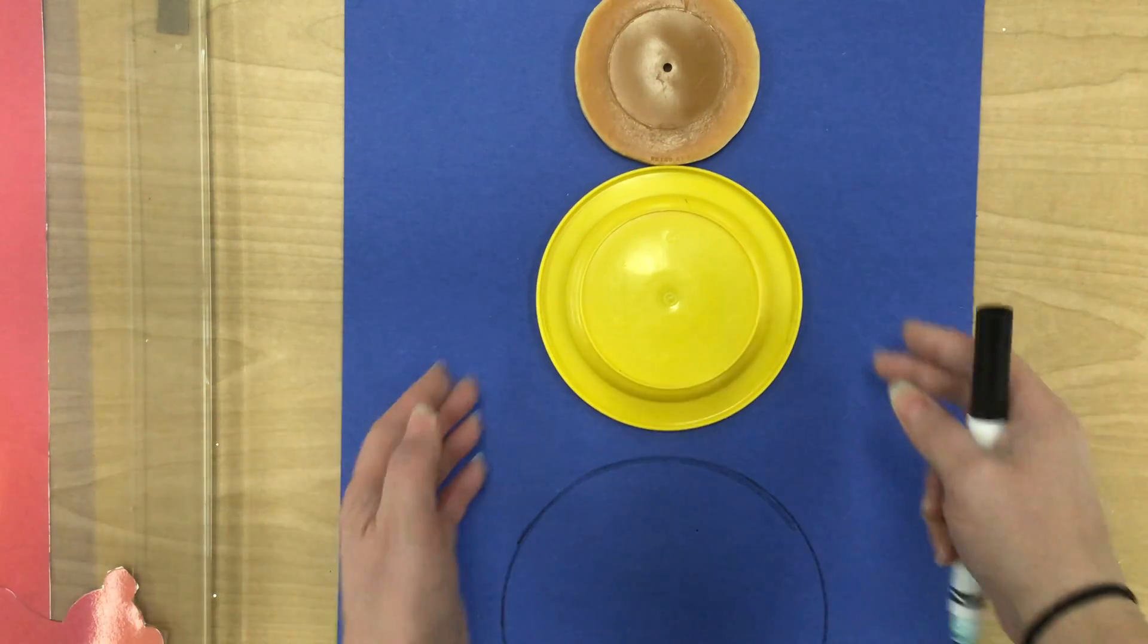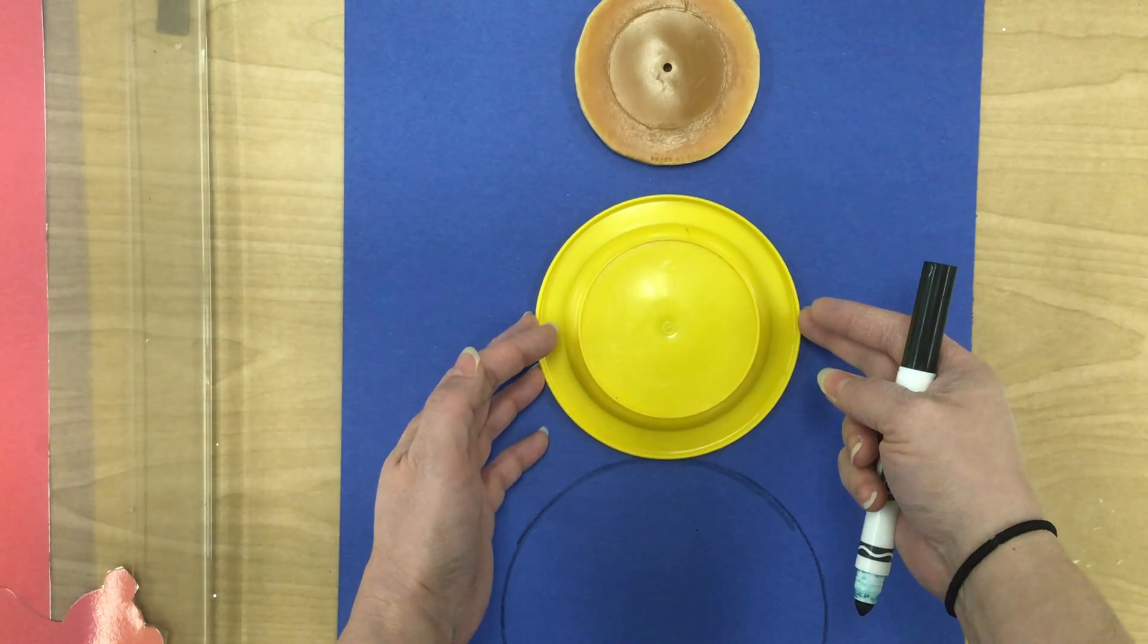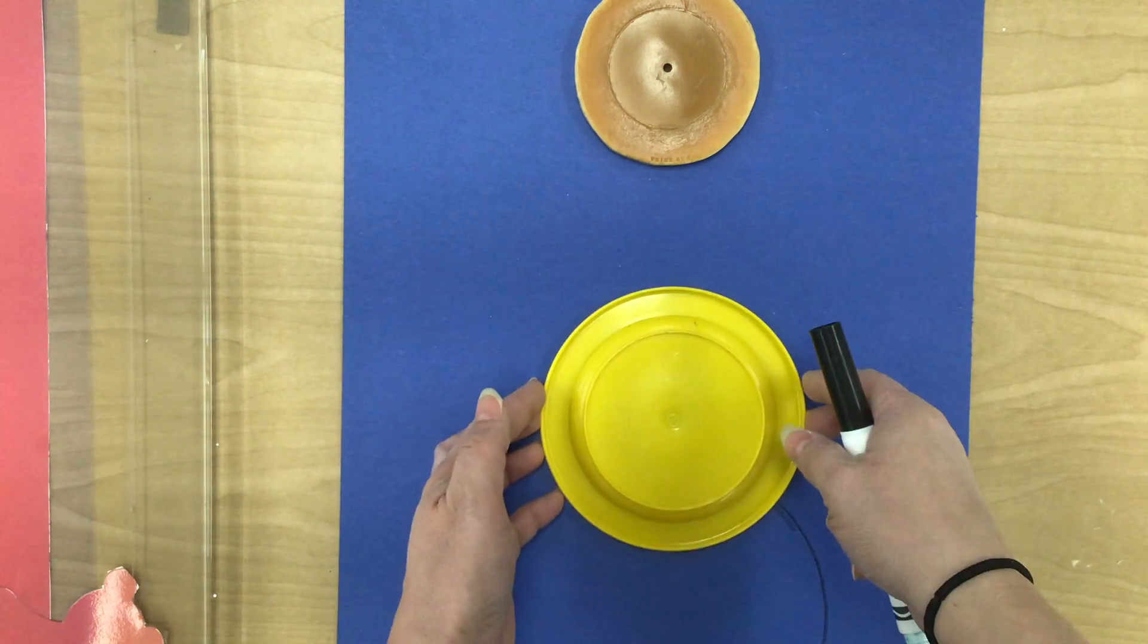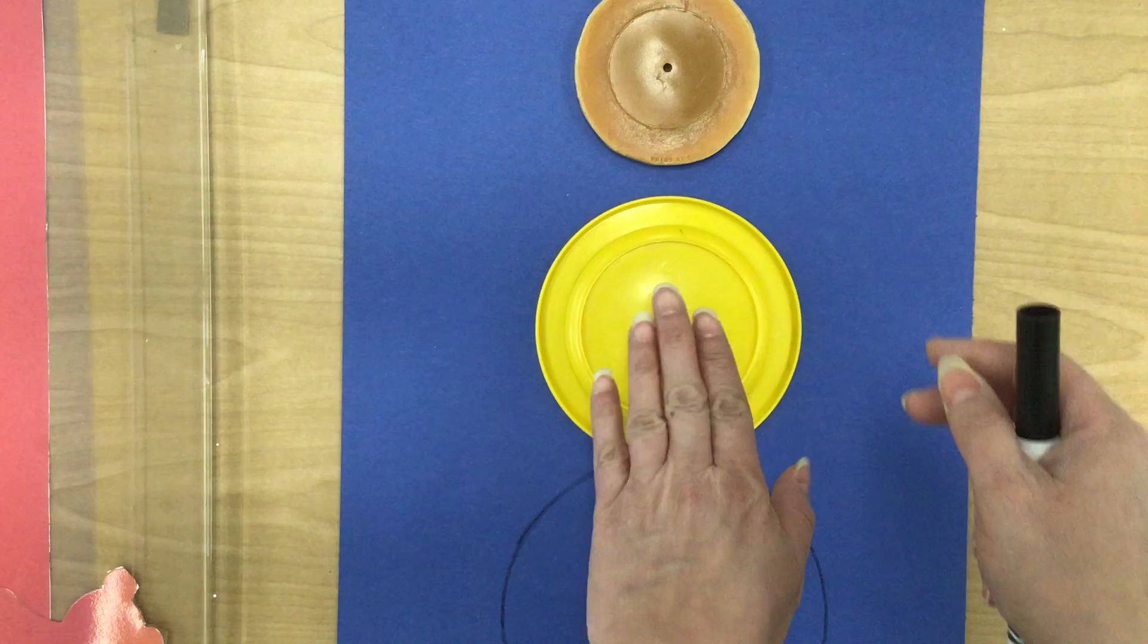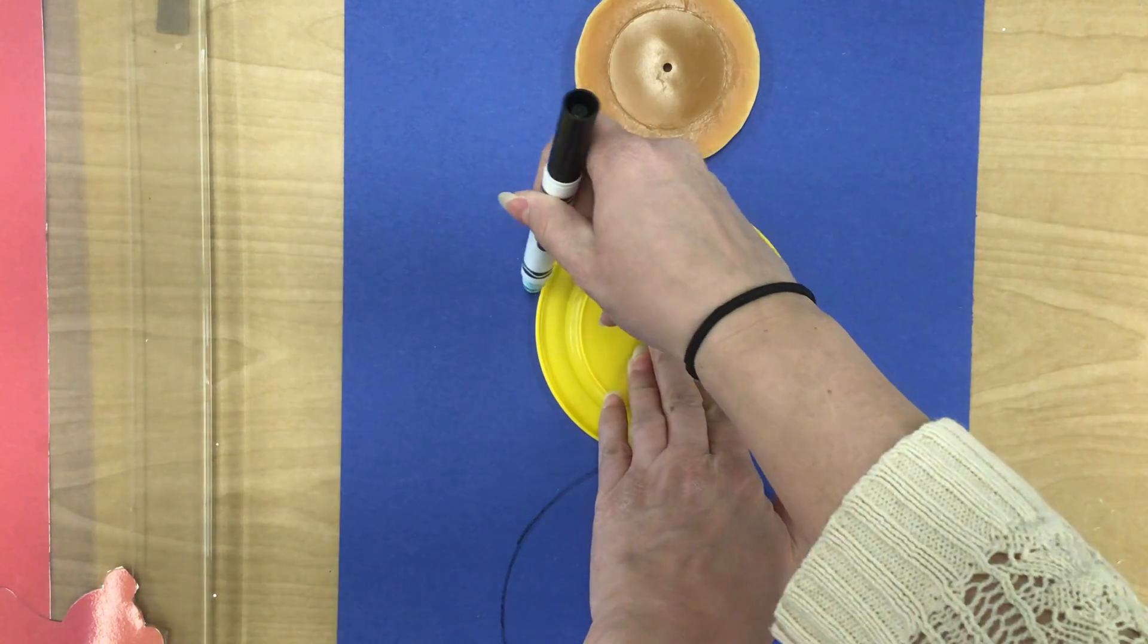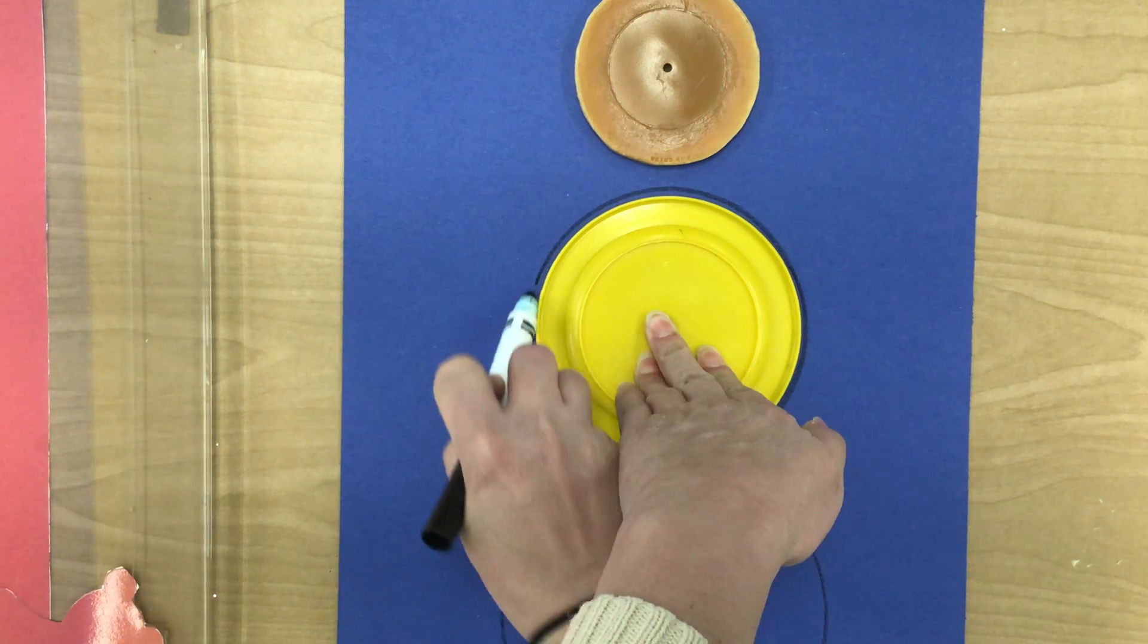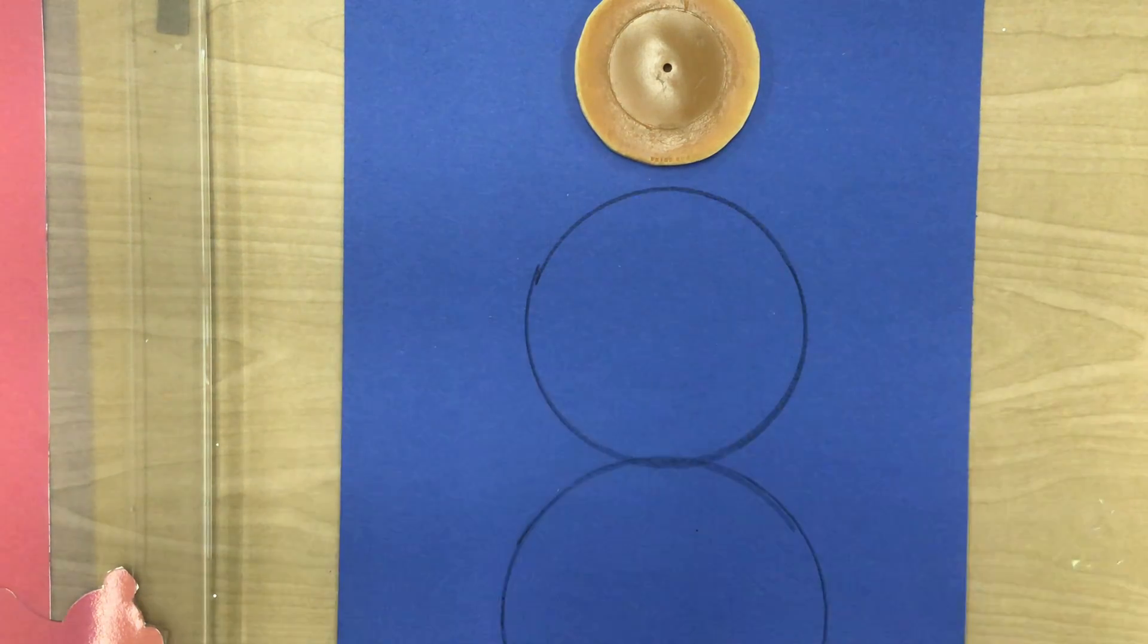Now it's my medium one. I'm going to make sure my medium one touches the large one, but doesn't go over it too much. Now I'm going to hold my medium circle and I'm going to trace around my medium circle. And when I'm done, I can take it away.